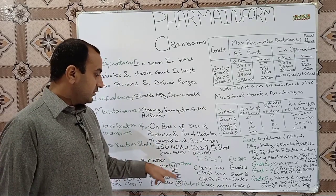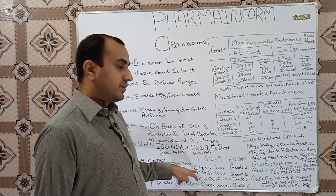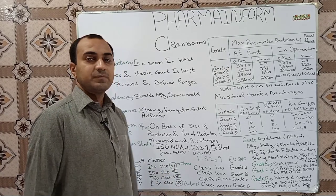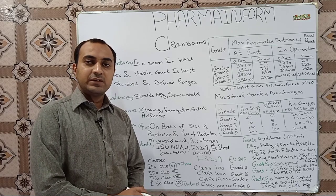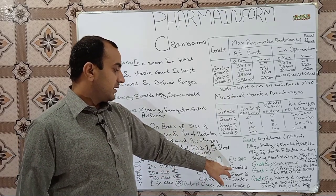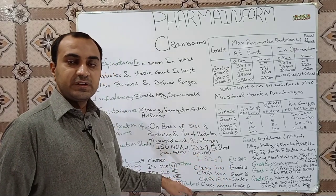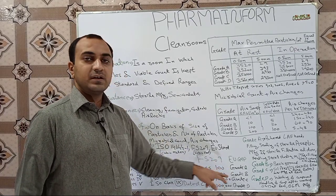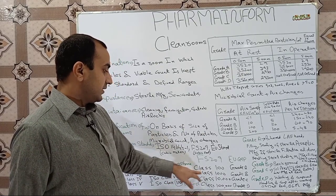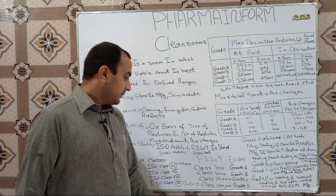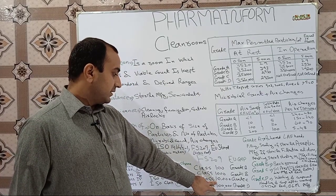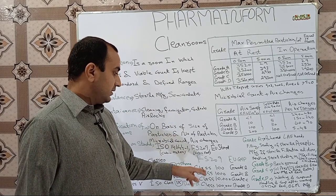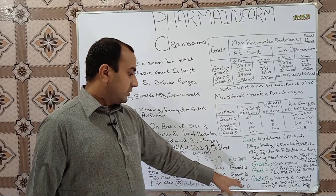Comparing the three standards: ISO Class 5 is equivalent to Class 100 and Grade A. ISO Class 6 is equivalent to Class 1,000 and Grade B. ISO Class 7 is equivalent to Class 10,000 and Grade C. ISO Class 8 is equivalent to Class 100,000 and Grade D.